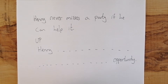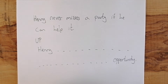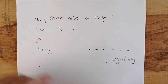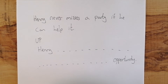Another CAE keyword transformation. It says: 'Henry never misses a party if he can help it.' We have to use the word 'up' — we can't change that word in any way — and it says 'Henry blank blank blank opportunity.' You've got to use between three and six words, so press pause and try it now.